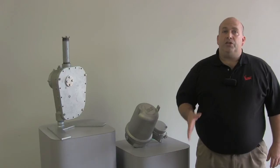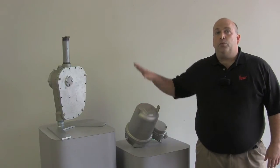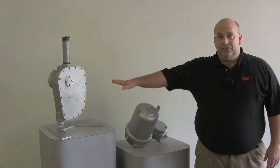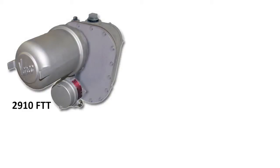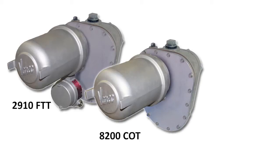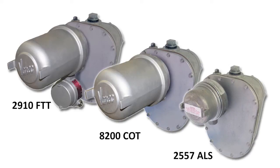In this video, I'll show you how to connect a transmitter to the 2500 automatic tank gauge. This procedure can be used for all Varic transmitters, whether you have a digital 2910 transmitter, analog 8200 current output transmitter, or a 2557 limit switch unit.